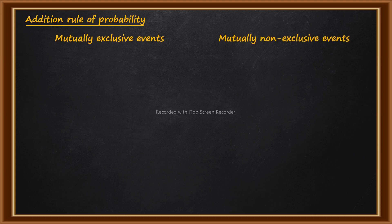Mutually exclusive events means the events cannot occur at the same time. Whereas mutually non-exclusive events means the events can occur at the same time — there is a possibility. You have to check these cases. First, let us talk about mutually exclusive events.